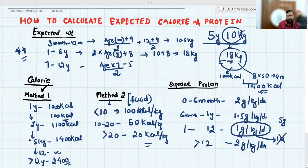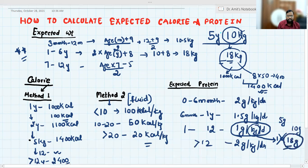You should not take 10 kg. You should take expected weight here also. So the requirement of the child is not 10 gram, the requirement is 18 gram. If you will give 18 gram protein and 1400 kilocalorie, this child will gain weight and will not have any further problem.